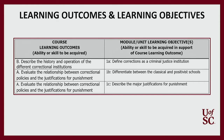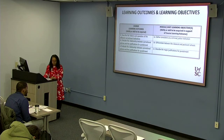Each learning outcome is represented by a sentence that starts with an action verb followed by content. For example: 'Describe the history and operation of the different correctional institutions.' A module-level learning objective, which is a smaller piece of the main outcome, could be 'Define corrections as a criminal justice institute.' When you write learning objectives, keep in mind they should be student-centered — not about what you're teaching, but about what the student should know after taking your class.